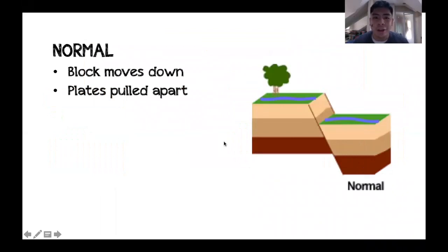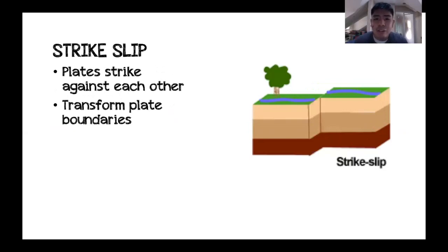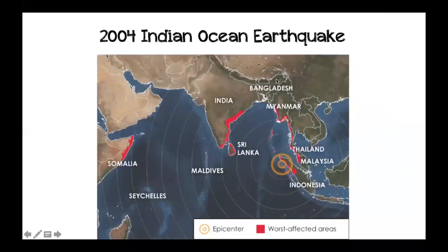In a normal fault, the block moves down during an earthquake, resulting from plates being pulled apart. In a reverse fault — also known as a thrust fault — one of the blocks moves upward, resulting from plates being pushed together. In a strike-slip fault, plates strike against each other like rubbing your hands, and these mostly occur at transform plate boundaries.